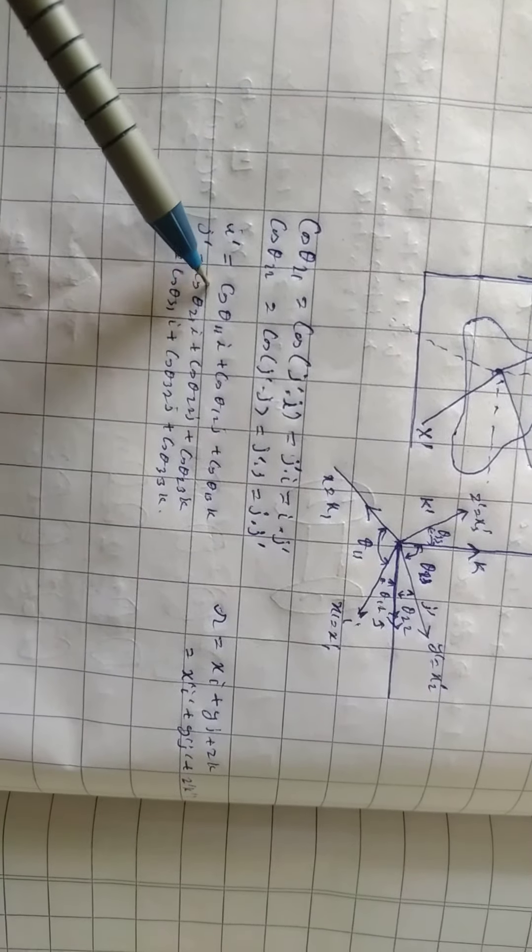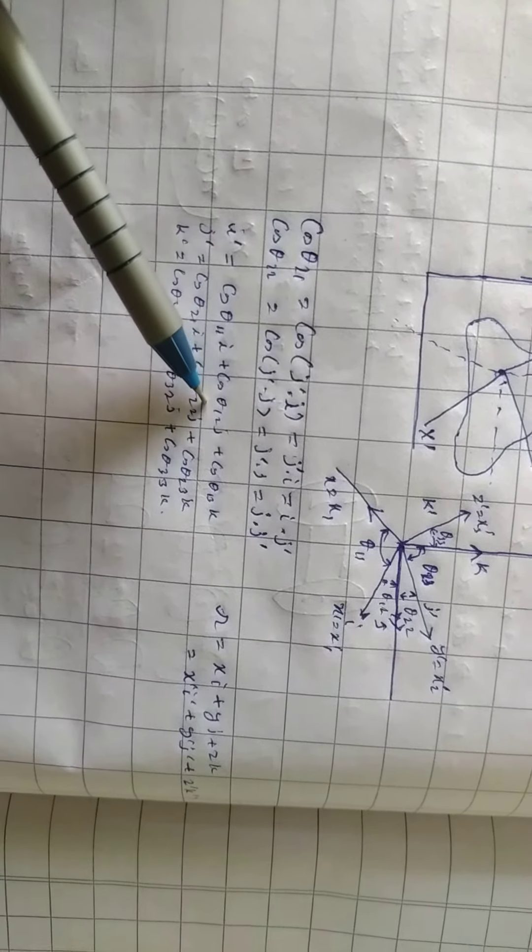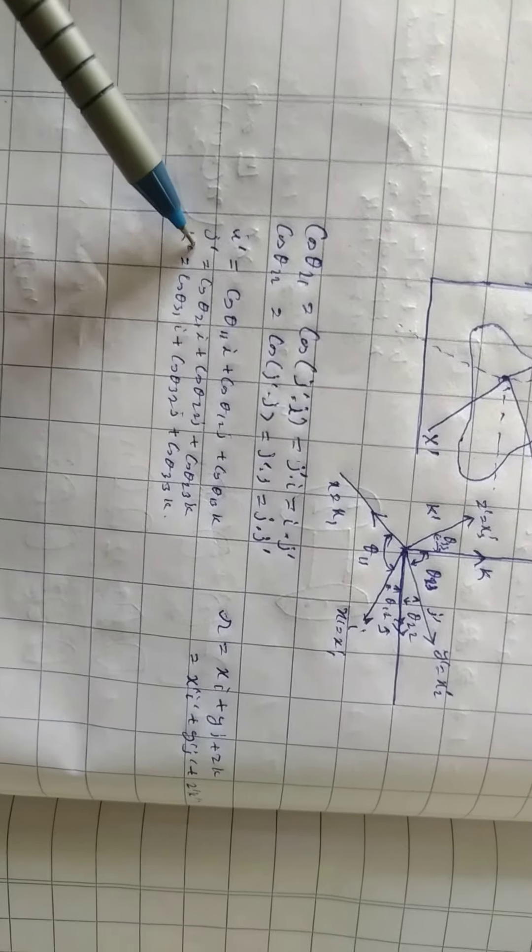i dash is equal to cos theta 11 i plus cos theta 12 j plus cos theta 13 k.